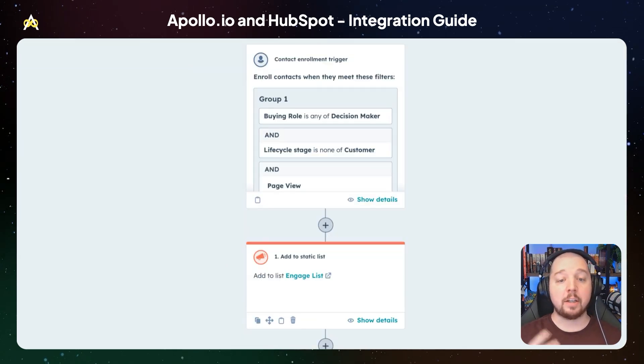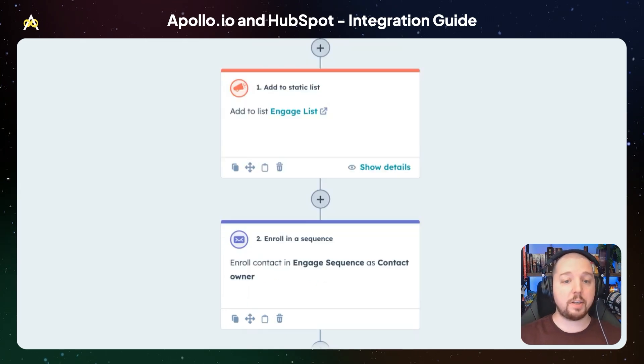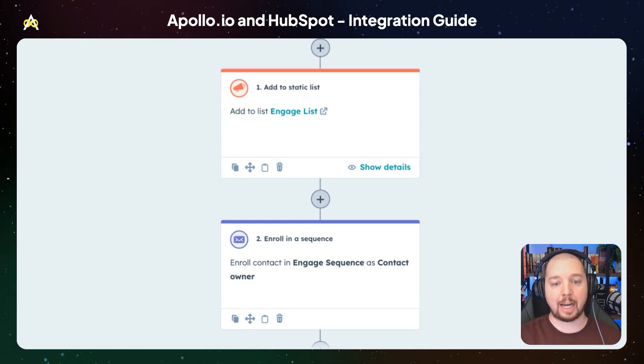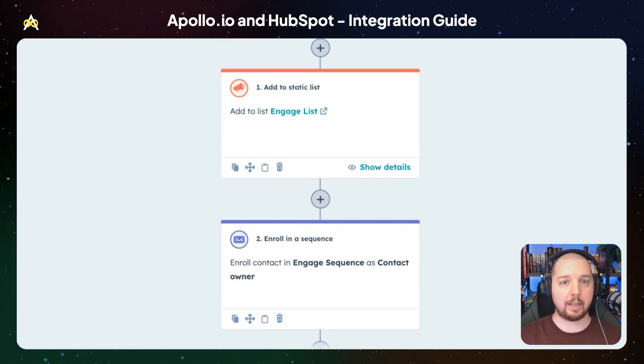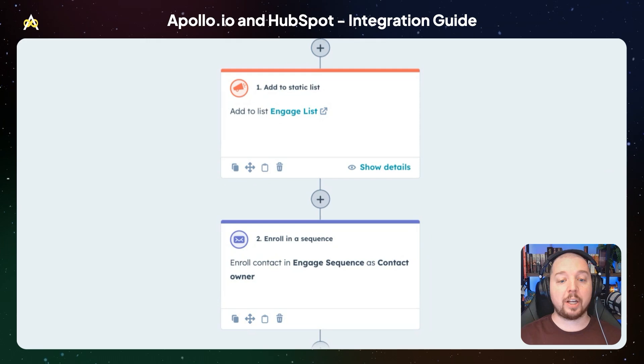If a contact meets that criteria, it's going to do two things. First, it's going to add it to a list that is associated to an audience for marketing advertising, so whenever that list updates, the contact will automatically get enrolled in whatever ads we're running to that audience. The second part is we're going to enroll it in a sales sequence. By doing both of these, marketing and sales can coordinate their messaging so that these contacts are seeing a lot of the same messages and that message is being reinforced from multiple different directions.